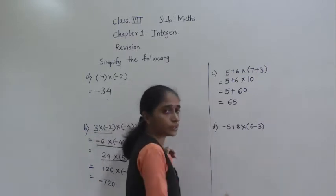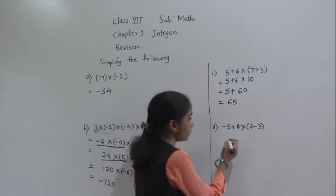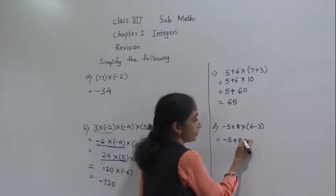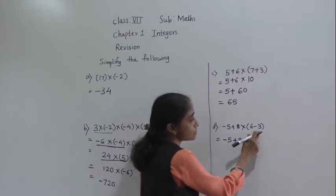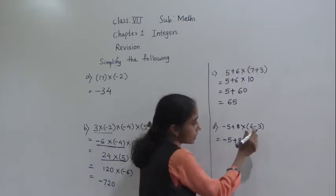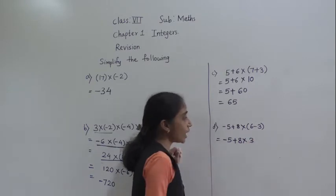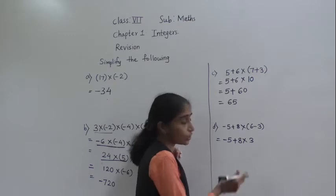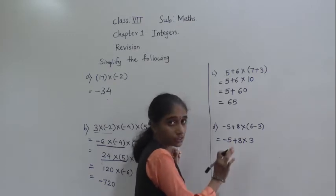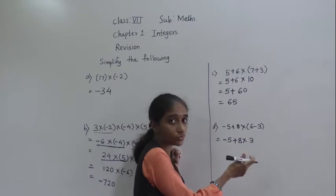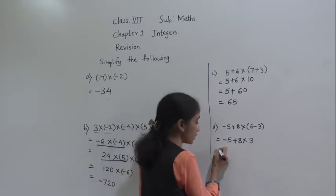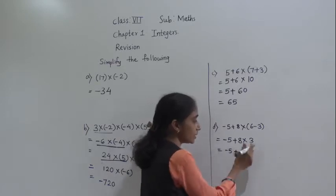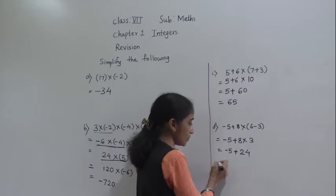Same way we are going to solve here also. First we are going to solve the bracket. So minus 5 as it is, plus 8 into — now 6 minus 3. First we are going to solve the bracket, so 6 minus 3 is 3. After bracket, we do not do first addition. First which operation? Multiplication. So minus 5 as it is, plus — 8 threes are 24.